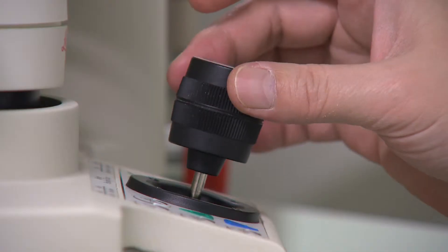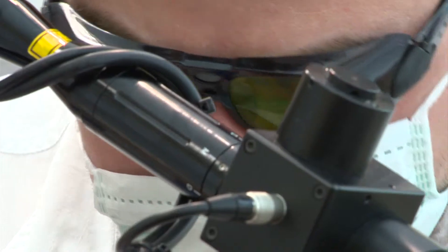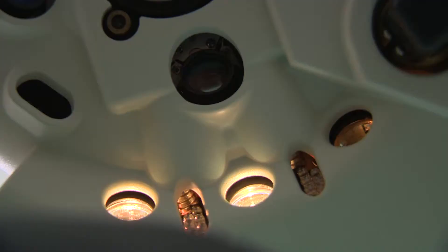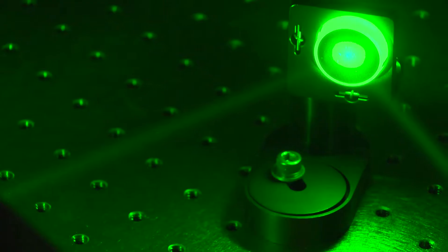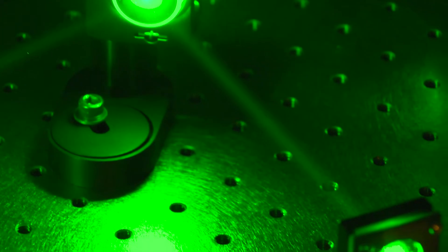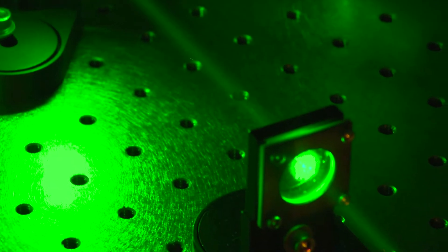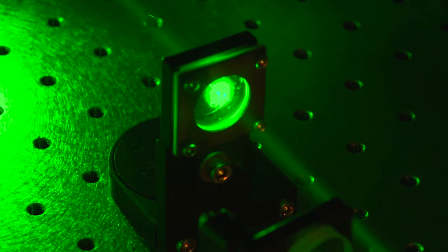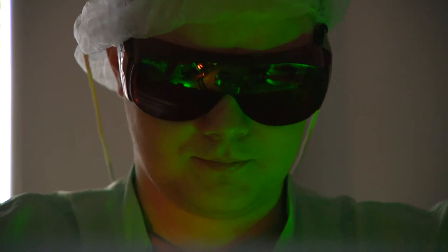It is used for example in laser surgeries where it is necessary to protect the eyes of the surgeon. Color filters find application in lighting, anti-glare layers are used for example in glass lenses. Other types of filters are used as aids for teaching physics.